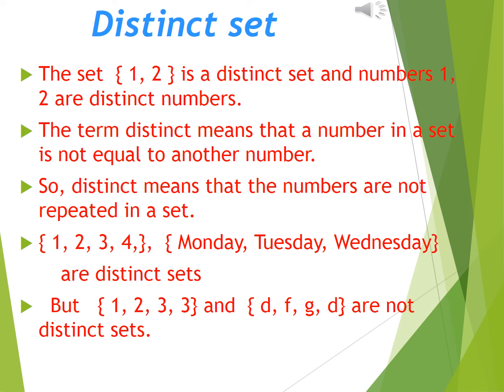But look at the last line. {1, 2, 3, 3} and {d, f, g, d} are not distinct sets. Why? Since in the first set, 3 is repeated twice, and in the second set, element d is repeated twice. So they are not distinct. No element could be repeated twice or any number of times.